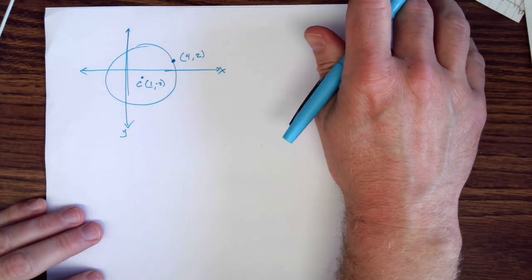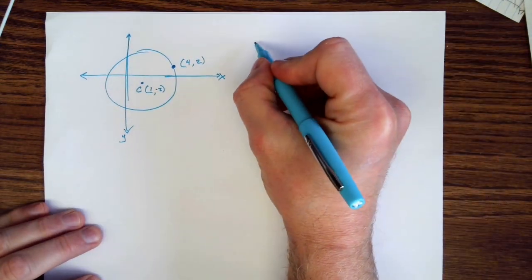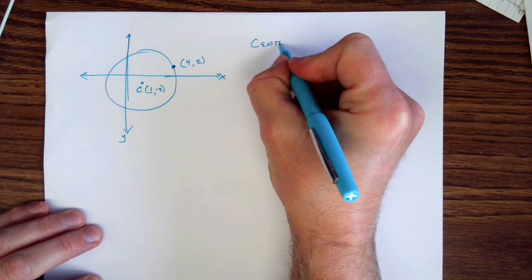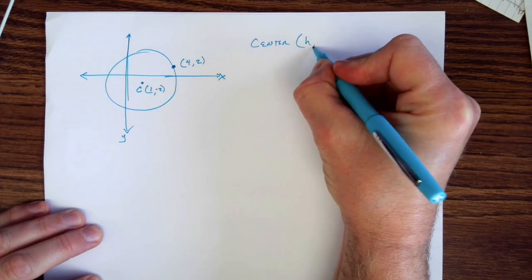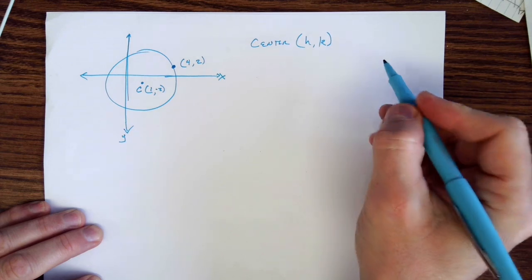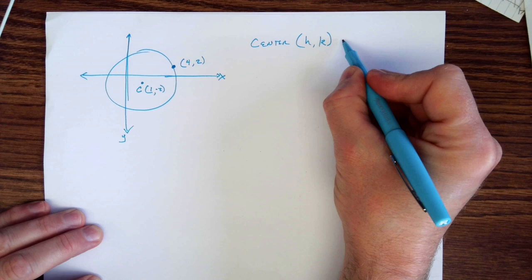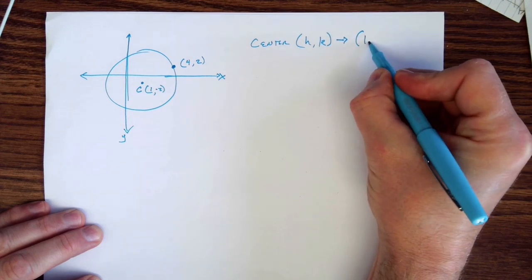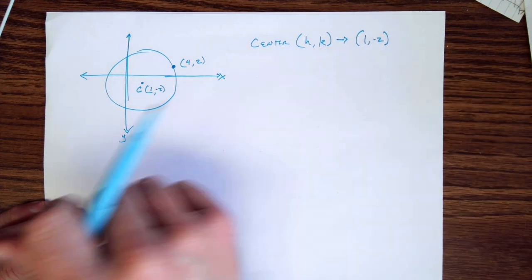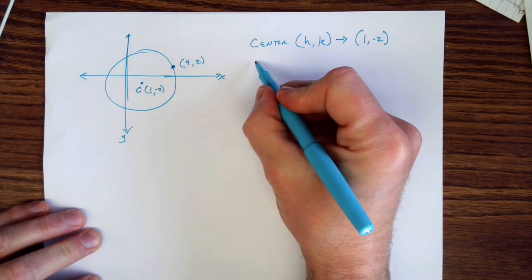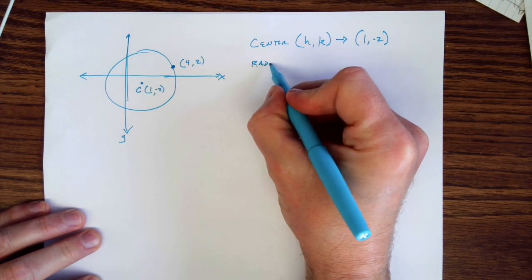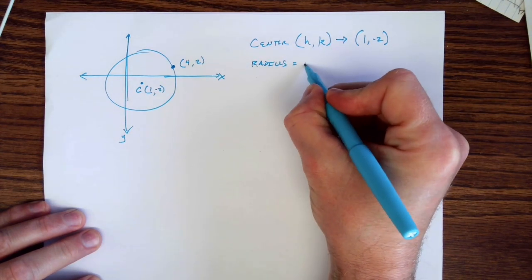In order to write the equation for the circle, we need two pieces of data. We need the center, which is h and k in the equation. I'll write the equation down here in a second. That's where the circle is centered at. In this case, the center is at 1, negative 2. The second piece we need is the radius, which is r.